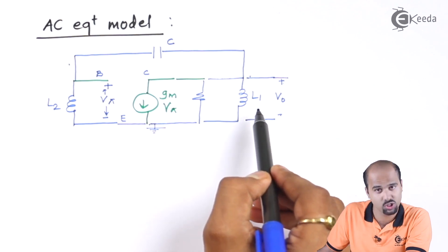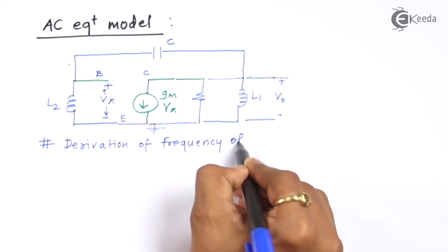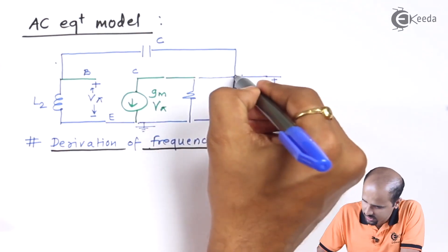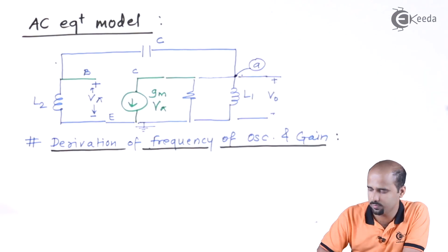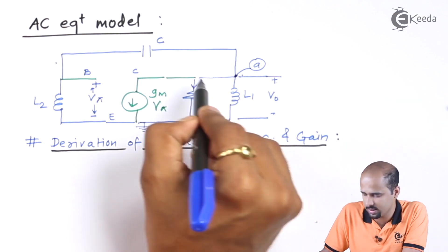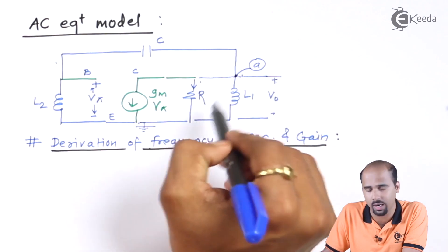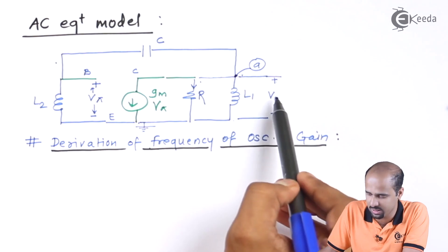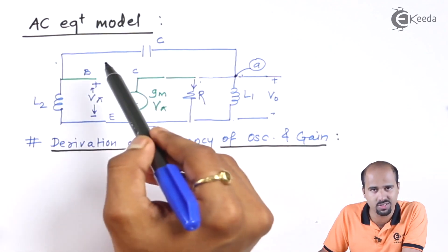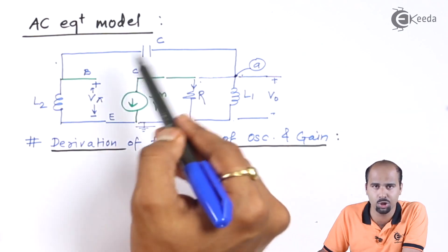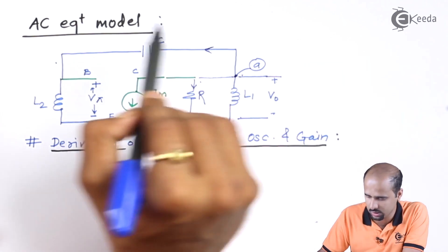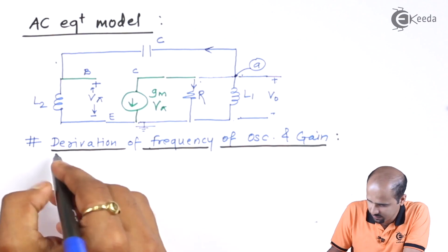Now our job is to find out the frequency of oscillation. We will start the derivation of the frequency of oscillation and the gain parameter for sustained oscillation. We start with KCL at node A. The current through resistance R is VO/R, current through inductor L1 is VO/(L1·S). Since HIE is open circuit, C and L2 are in series, so we add their reactances for the current through that branch.